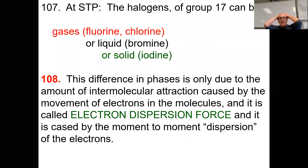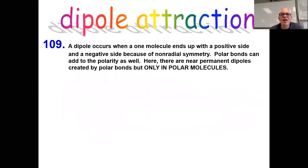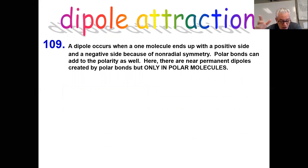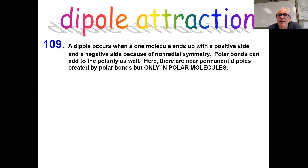Even though electron dispersion is the weakest of all intermolecular forces, it makes a difference. If there are enough electrons, you could be a solid; not quite enough, a liquid; and if there aren't too many electrons, there's still not zero attraction but it doesn't seem to have much effect. Electron dispersion is caused by the motion of electrons — they are constantly moving. Dipole attraction is different: when two atoms bond together with a difference in electronegativity value, the bonds become polar.